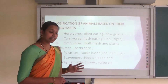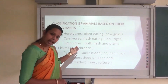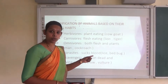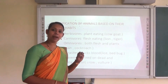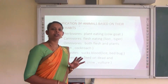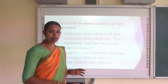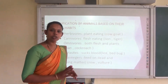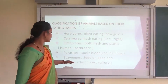The third category is omnivores — the animals which eat both the flesh of other animals and also plants. They are known as omnivores, and the examples are bear and human beings, who are also omnivores.